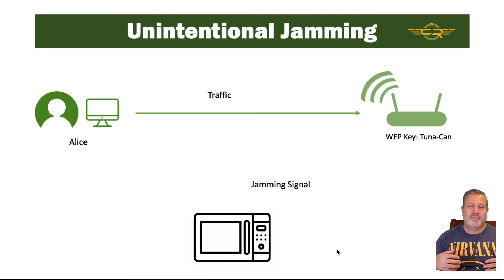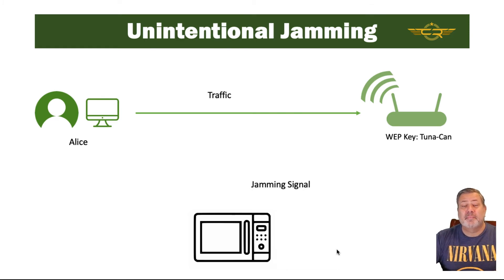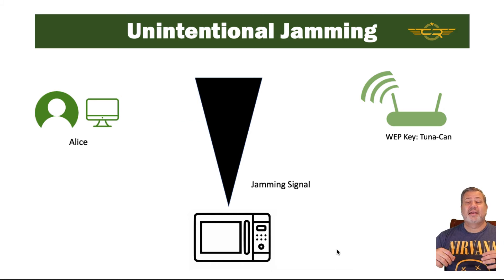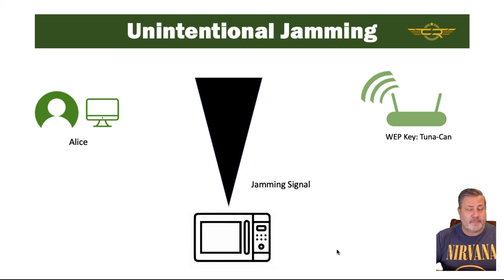Unintentional jamming has the same effect. Alice tries to connect to the network — in this case, maybe a microwave is being used — and again, she's not able to connect due to the signal being put out by the microwave. It is possible for an attacker to use this type of attack not only to cause a denial-of-service, keeping people from computing resources, but it may also be joined with a physical attack, where the attacker uses jamming to disable wireless cameras and then conduct a physical attack.